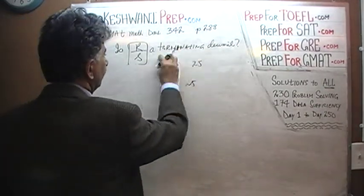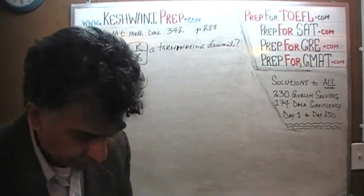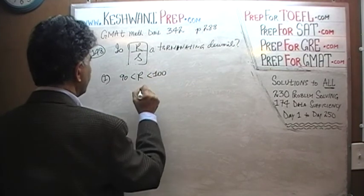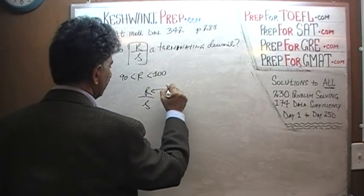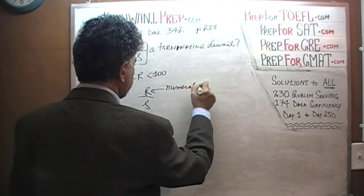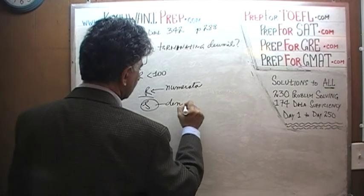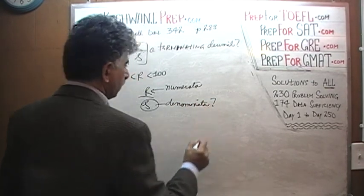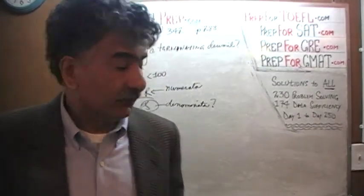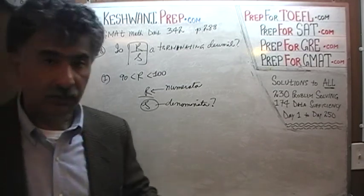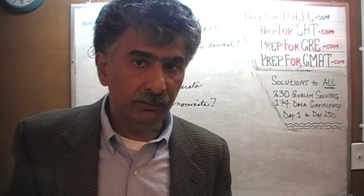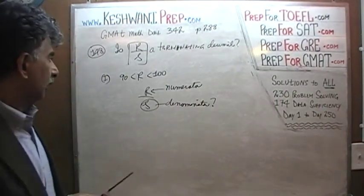In statement 1, they tell us that R lies between 90 and 100. Now remember, R is our numerator. But what about the denominator? We know nothing at all about the denominator. Simply knowing that we have some quantity which is somewhere between 90 and 100 being divided by some other number, without knowing anything at all about the other number, we can't really tell if the fraction is going to have a terminating or non-terminating decimal. It all depends. It could be terminating; it could not be terminating. Statement 1 by itself is not enough.